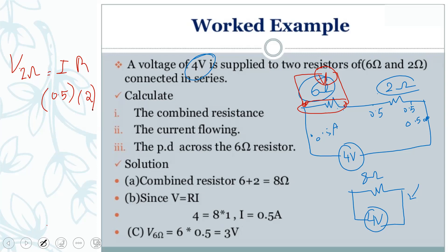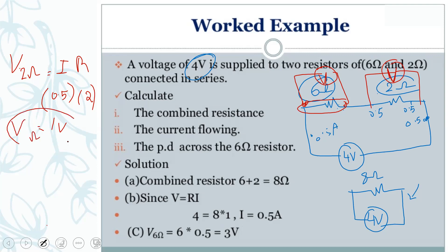Imagine I bring the voltmeter and place it only on the two-ohm resistance to find the potential difference on that resistance only. Two ohms times 0.5 ampere gives one volt. So the voltage across the two-ohm resistance is one volt.